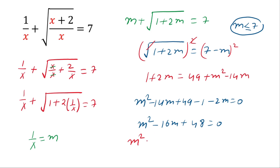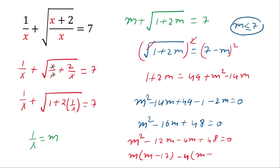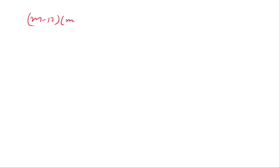Splitting the middle term: m squared minus 16 times m plus 48 becomes m squared minus 12 times m minus 4 times m plus 48, equals 0. Taking m common from the first two terms gives m times (m minus 12), and taking minus 4 common from the last two terms gives minus 4 times (m minus 12), equals 0. Taking (m minus 12) common gives (m minus 12)(m minus 4) equals 0.